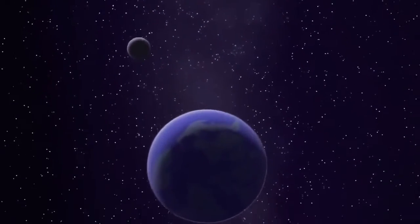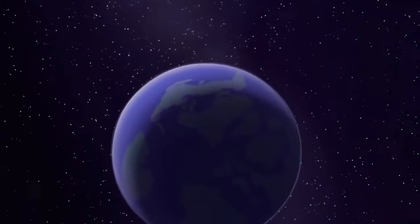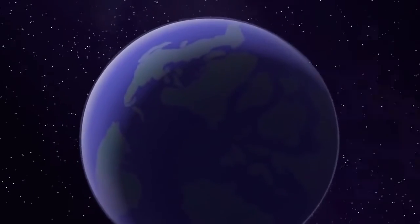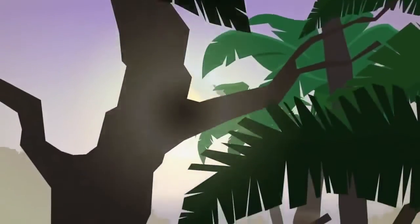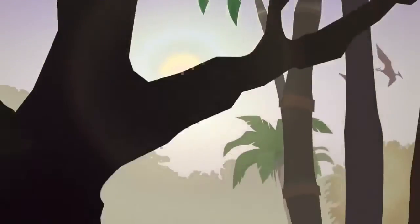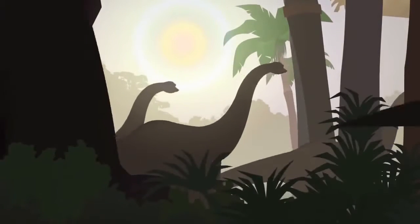This is the Earth as it looked 90 million years ago. Geologists call this period the late Cretaceous. It was a time of extreme global warming when dinosaurs still ruled the planet.